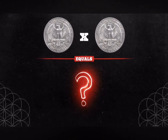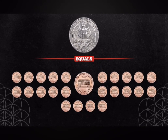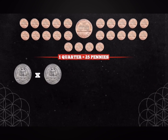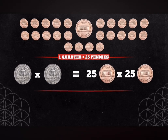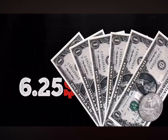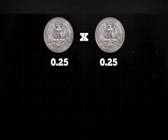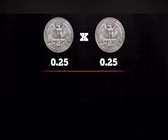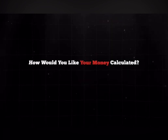What is a quarter times a quarter? A quarter equals 25 pennies. Therefore a quarter times a quarter equals 25 pennies times 25 pennies, which equals 625 pennies — that's $6.25 US dollars. Yet according to the calculator, 0.25 times 0.25 equals 0.0625. How would you like your money calculated?